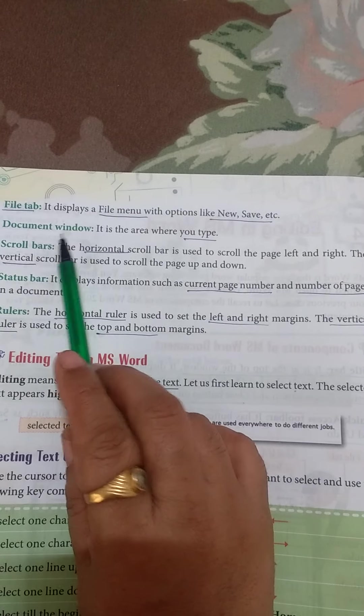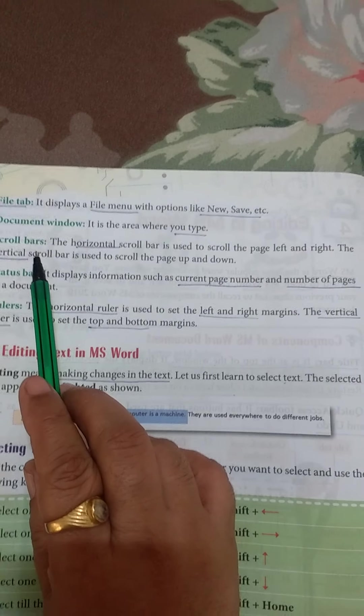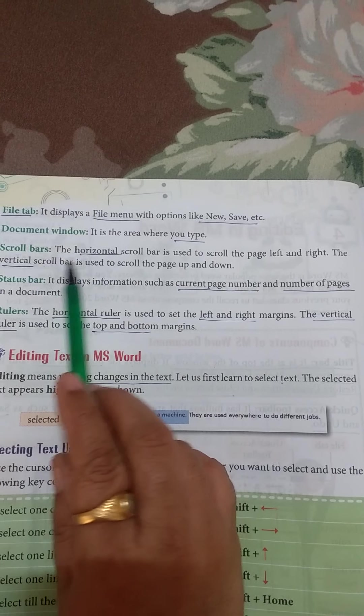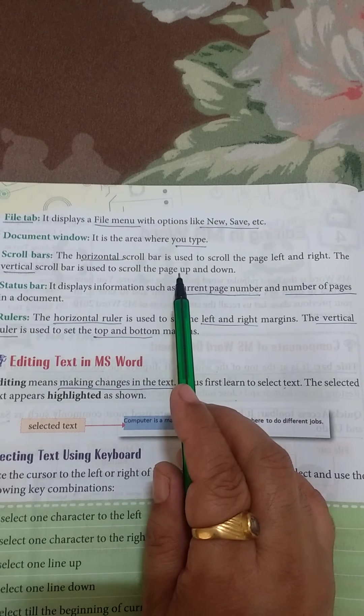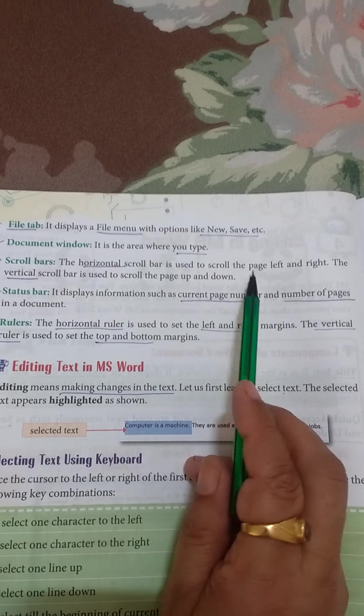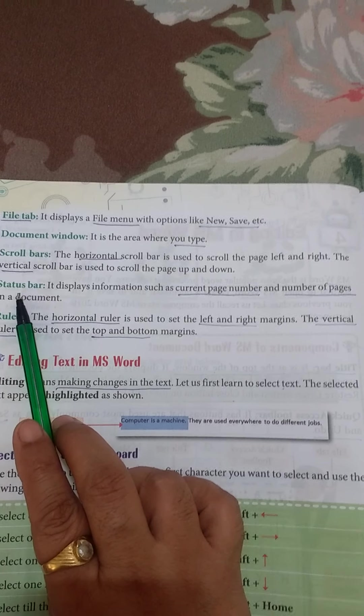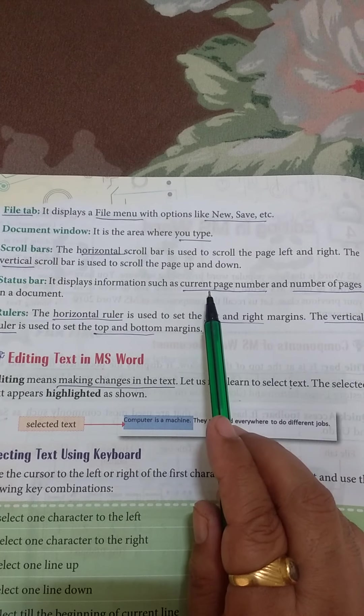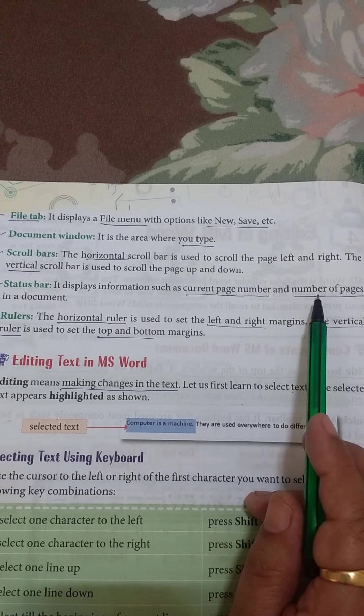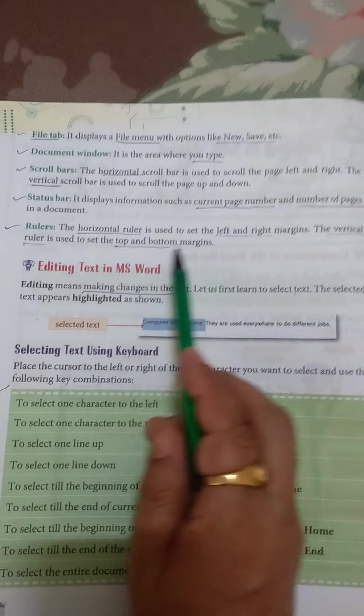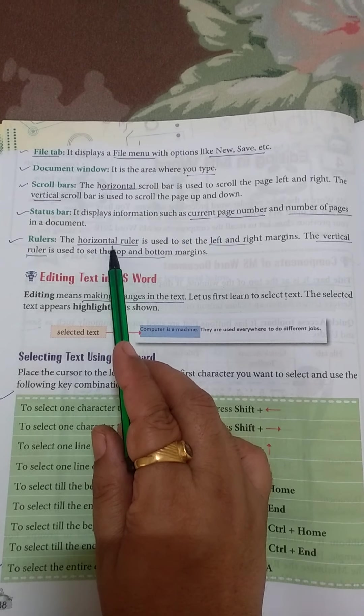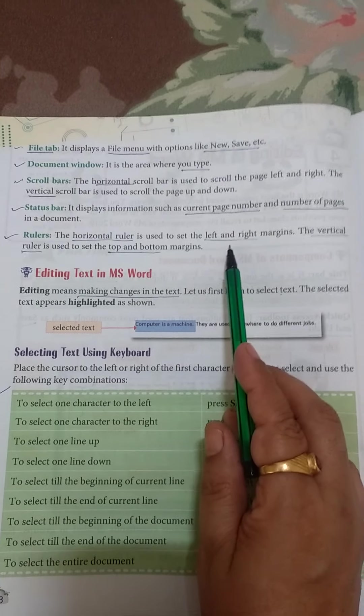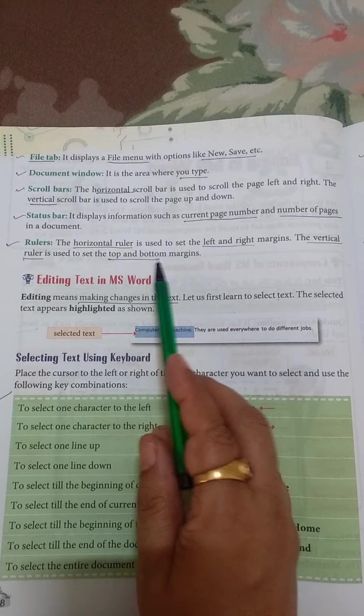Document window is where we type our text. Scroll bars are two types: horizontal and vertical. We can do page up and down, left and right. Status bar has current page number and number of pages. Rulers are two types: horizontal and vertical. We can move the page left and right, top and bottom.